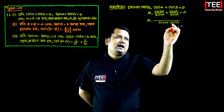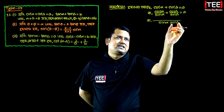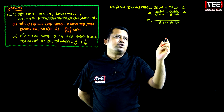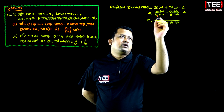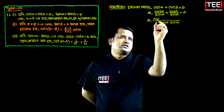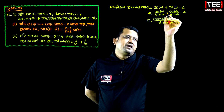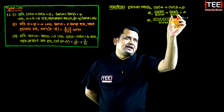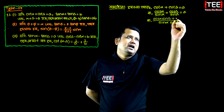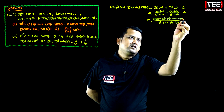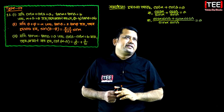We have sin beta, sin beta, and sin beta is equal to a cos alpha, and sin beta is equal to a.